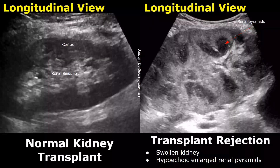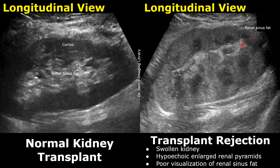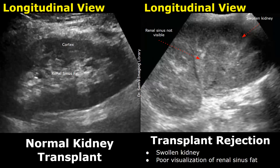Renal transplant rejection is a serious complication that can occur after the operation. Ultrasound features include a swollen kidney with hypoechoic enlarged renal pyramids. It is difficult to distinguish rejection from other parenchymal diseases on ultrasound. Here is another image showing transplant rejection — we can see a swollen kidney with hyperechoic enlarged renal pyramids, and another feature is poor visualization of renal sinus fat. In this image we do not see the hyperechoic renal sinus fat, and this feature along with a swollen kidney usually indicates transplant rejection.